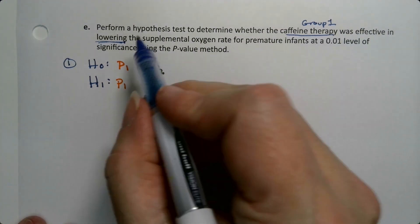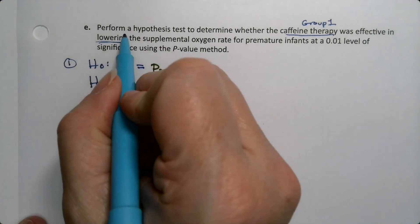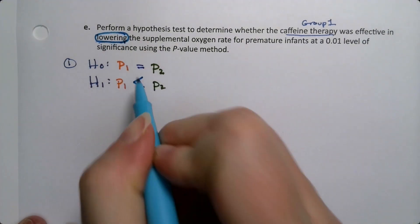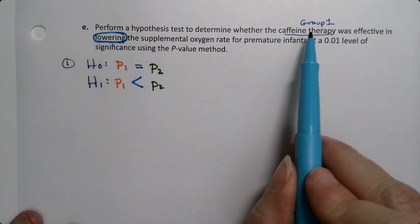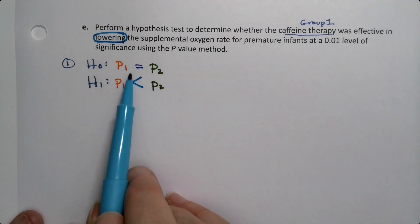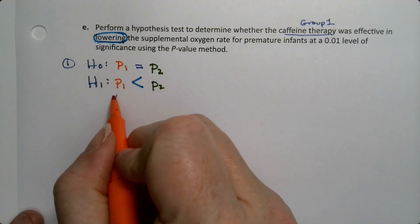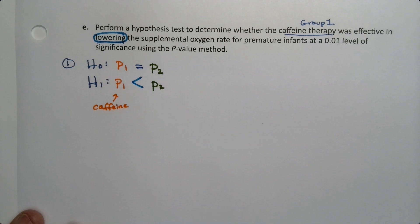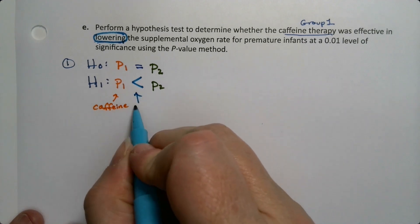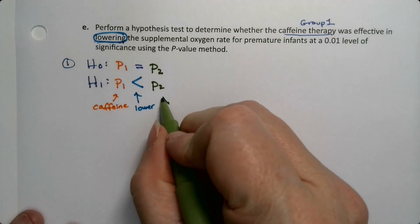So by that word 'lowering' that means that we're going to be going this way, and it's not just the word lowering, it's also the fact that group one is in the front. The caffeine group - this is the caffeine group - the caffeine group is lower than the placebo group. This part you don't actually write generally but I'm writing it here just so we all understand.